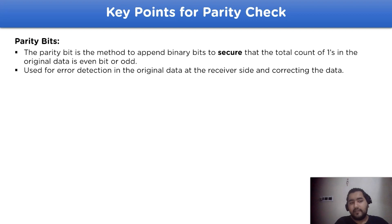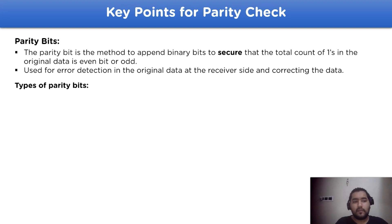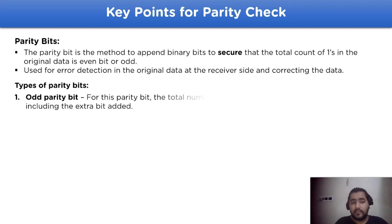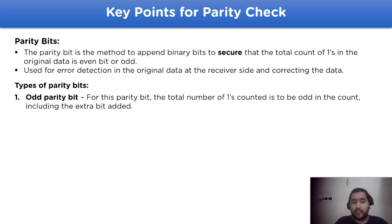The parity bit check method is used to detect errors in the original data at the receiver side, and in some cases it is also used to correct them. There are two types of parity bits available. The first one is odd parity bit — in this method, the number of ones in the original data including the parity bit should be odd. For example: